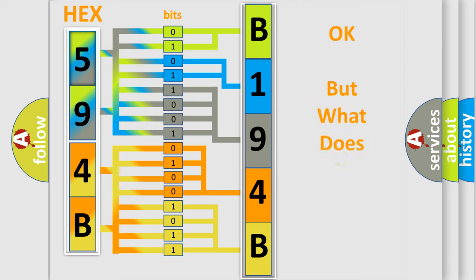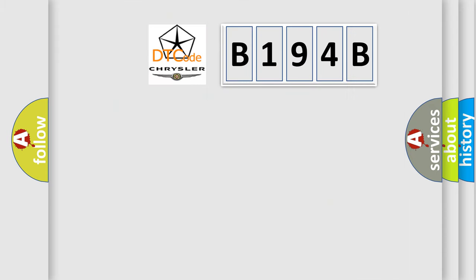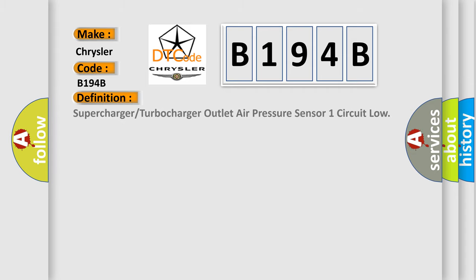We now know how the diagnostic tool translates the received information into a more comprehensible format. The number itself does not make sense to us if we cannot assign information to what it actually expresses. So, what does the diagnostic trouble code B194B interpret specifically for Chrysler car manufacturers? The basic definition is: Supercharger or turbocharger outlet air pressure sensor one circuit low.